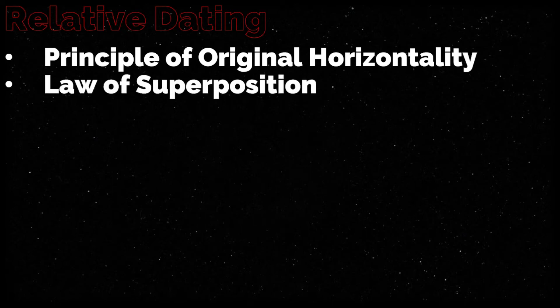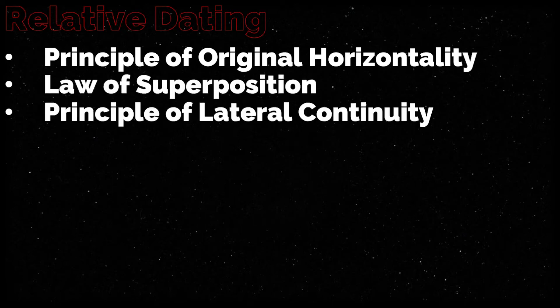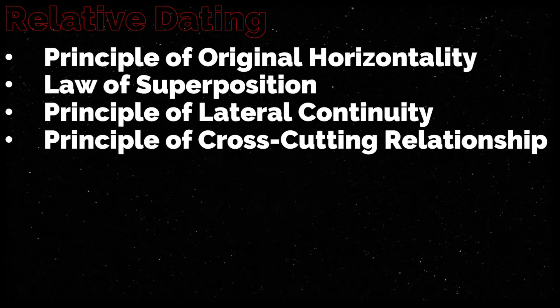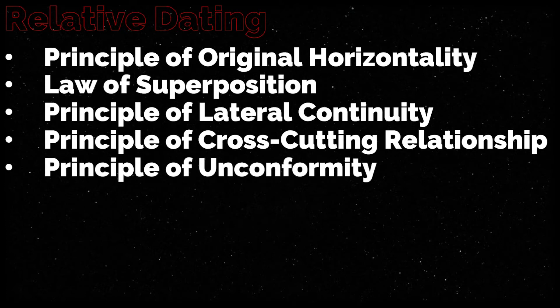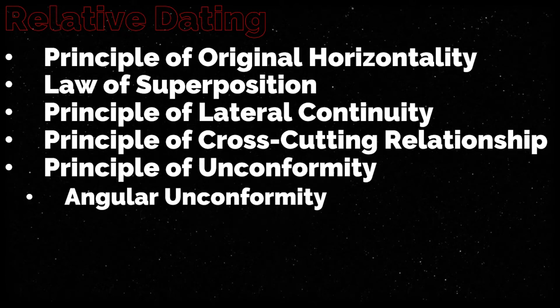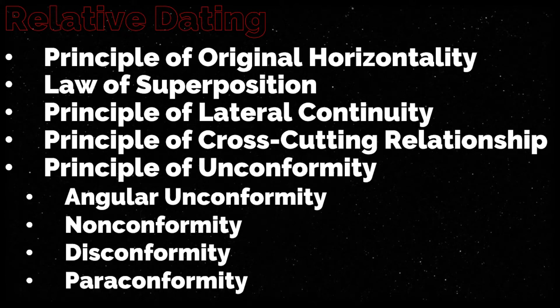In earth science, there are different methods and principles used to determine the relative ages of rocks. We have the principle of original horizontality, the law of superposition, the principle of lateral continuity, the principle of cross-cutting relationship, and the principle of unconformity. Under the principle of unconformity, we have four types: angular unconformity, nonconformity, disconformity, and paraconformity.